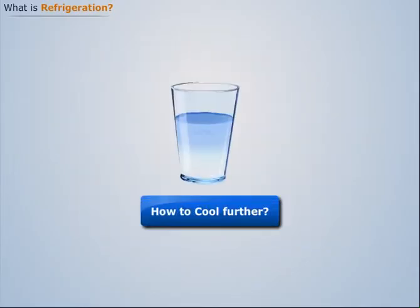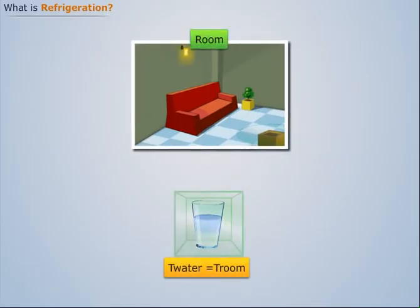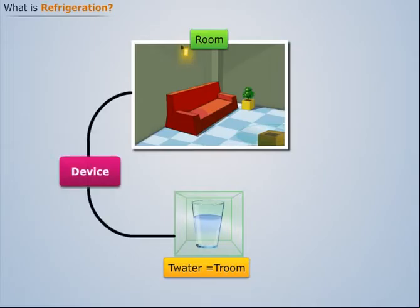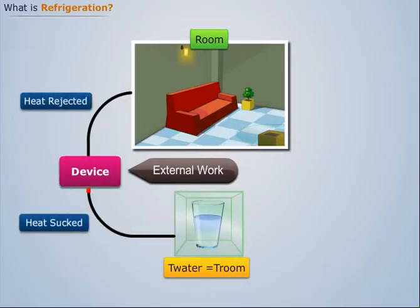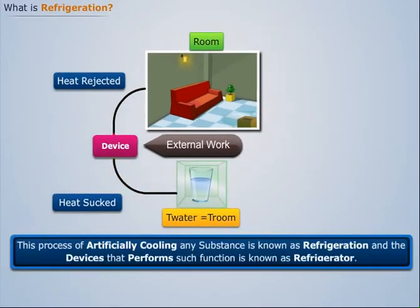But what if we are required to cool down this water further below the room temperature? It will be achieved only by first confining the water and cutting off its direct contact with surroundings, then attaching this water to the surroundings by some device on which external work is applied. This device will suck the heat out of the water and emit it into the surroundings.